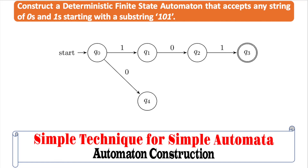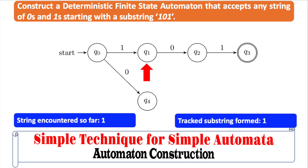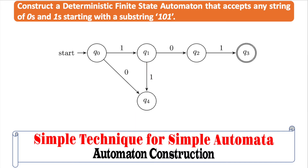Let us continue providing a path for input 1 from q1. There is already a path from q1 if we encounter a 0, but there is no path if we encounter a 1. If we are in q1, we already encountered a 1, which might be the start of the string 101. Since we are tracking the string 101 and we encountered a 1 already, we now want to encounter a 0, not a 1. But if we encounter a 1, the substring formed is 11, which can no longer form the string 101. So if we encounter a 1 from q1, it also goes to the dead state q4, as shown on the screen.